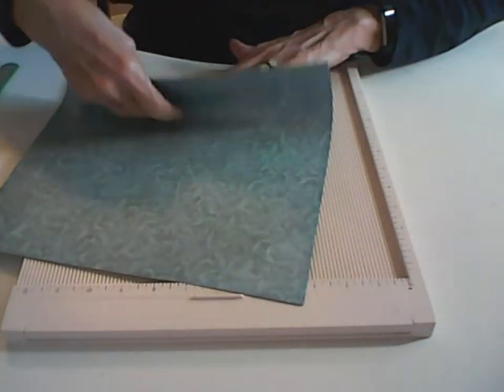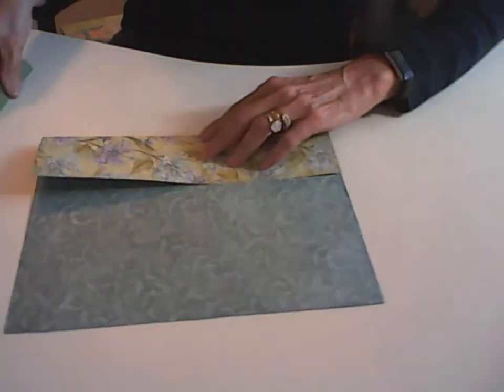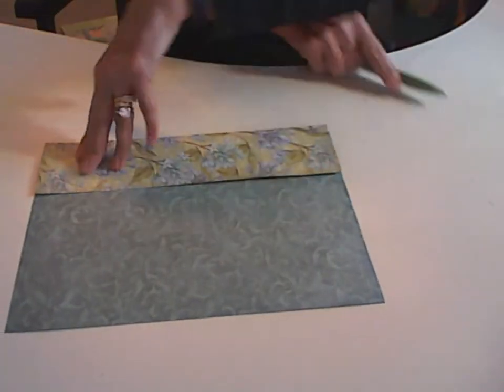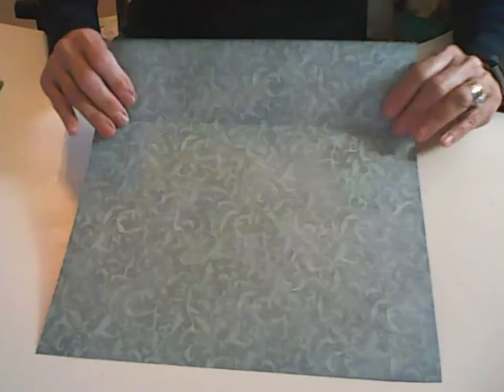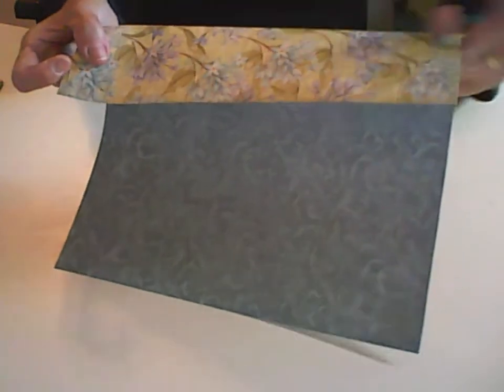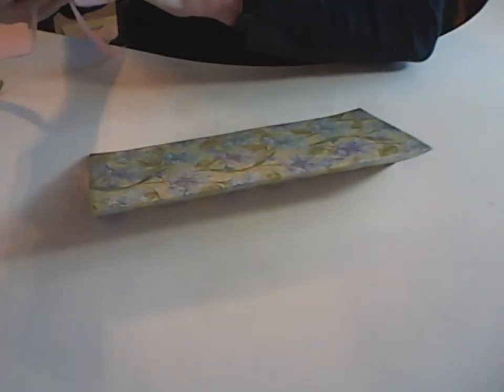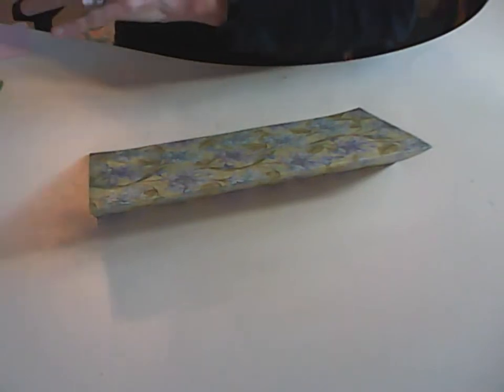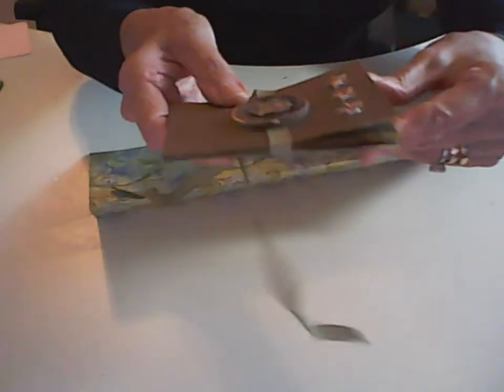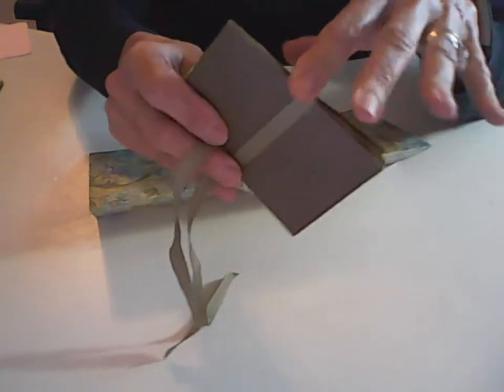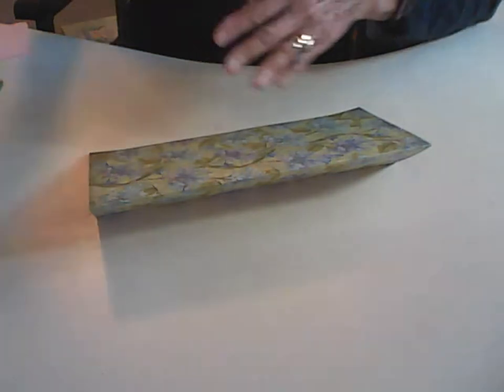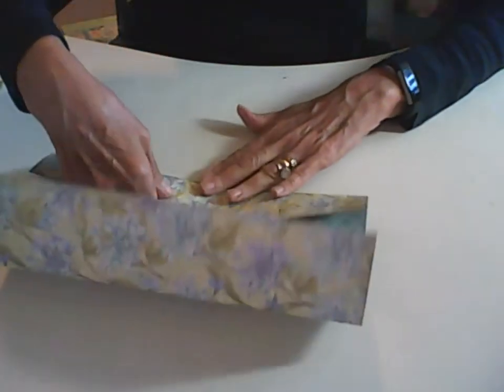So now you want to go ahead and fold on those scores that you just did. I'm going to move my cardboard out of the way because you really aren't going to need it after this point. Use your bone folder to get those. Now sometimes when you fold double-sided paper it cracks a little bit along your fold. You can ink those edges if you're concerned about the look.